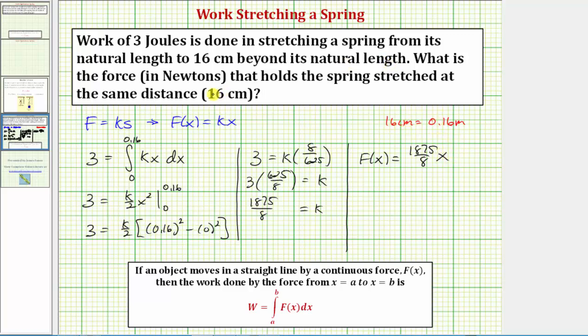Which means to answer this question, we need to find big F of 0.16, which is 1,875 divided by eight times 0.16. And this product gives us 37.5 newtons.